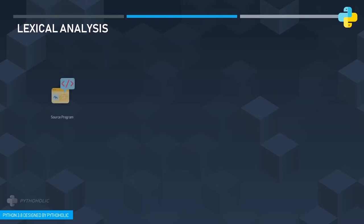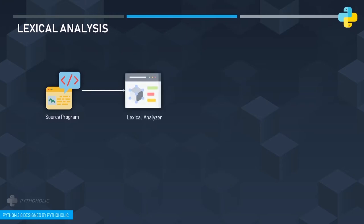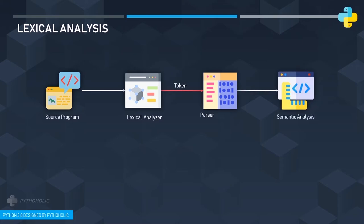Lexical analysis is the first step for compilers. It is a process where the program written in a high-level language like Python or Java is converted from a sequence of characters into a sequence of tokens. Tokens are the individual elements of the program — they can be identifiers, keywords, commas, curly braces, or simple brackets. The program that performs this is called a lexer, parser, scanner, or tokenizer. The parser takes input as a sequence of tokens and builds a data structure in the form of a parse tree used by semantic analysis.